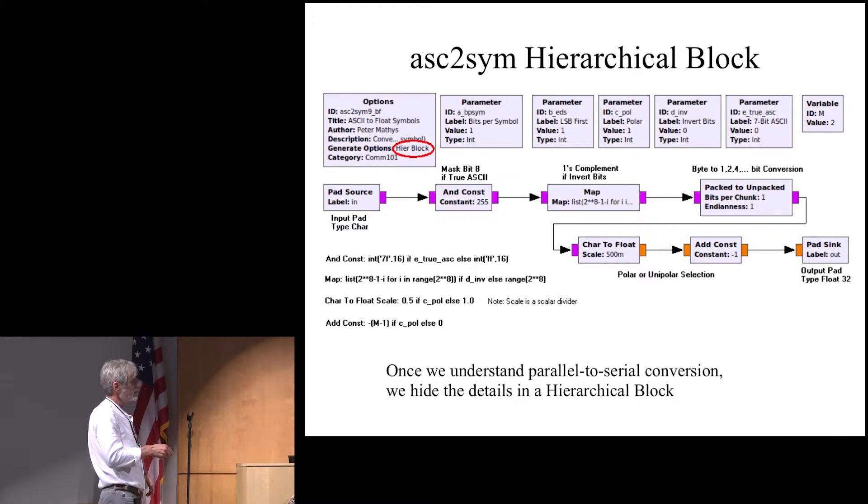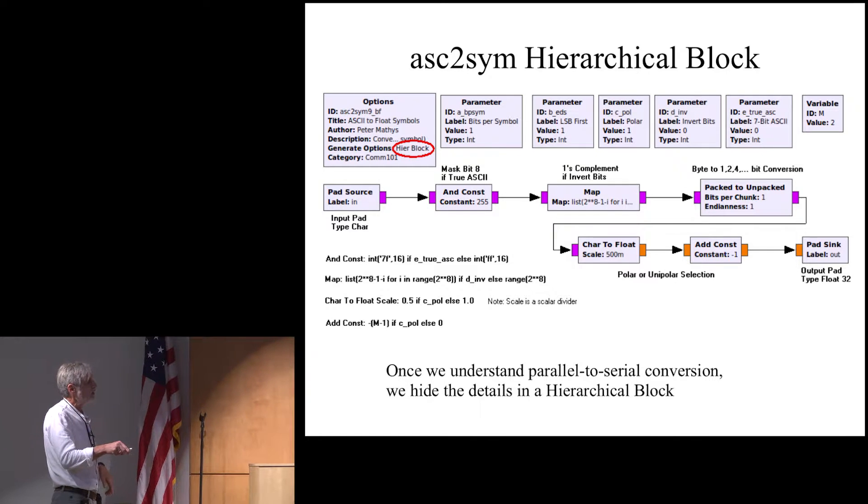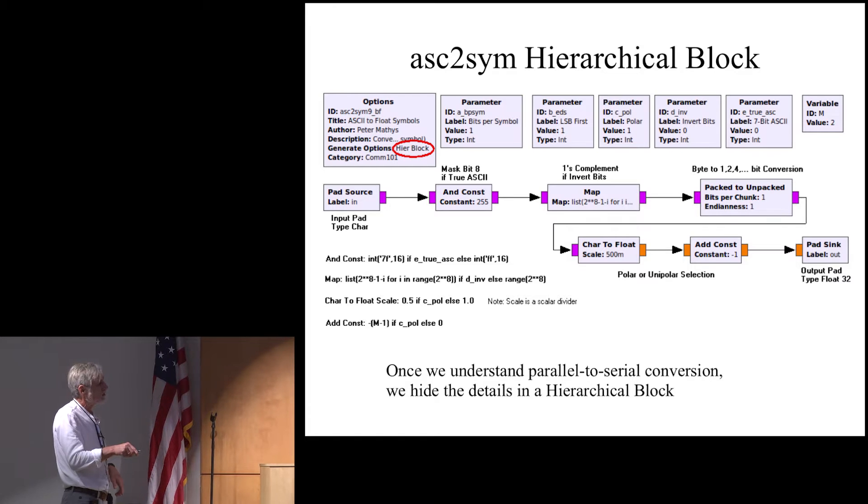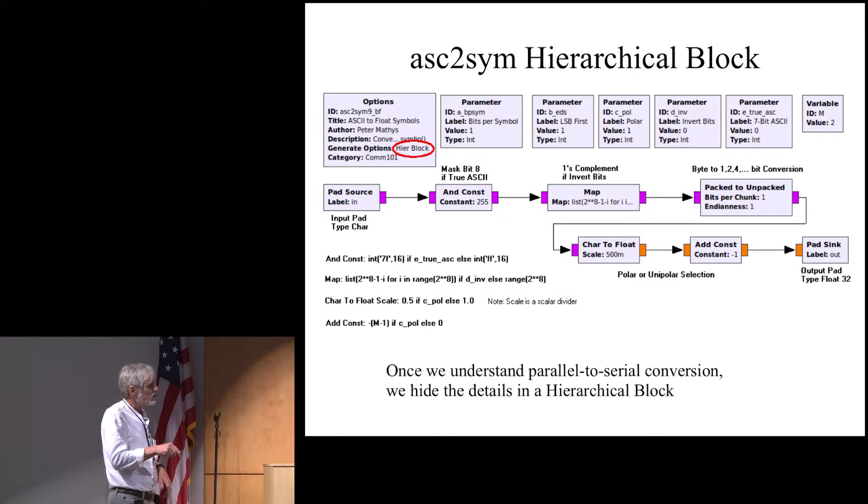OK, and so it has here, it has an input, it has an output, and then it has a bunch of things here. Those two things together, they make it so that you can choose whether it's polar or unipolar. Then there is the parallel to serial conversion. You can change here, actually this is the polar to unipolar selection. This is something else, this is to invert the bits, the ones complement and so on.